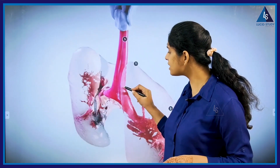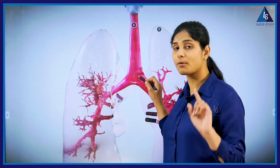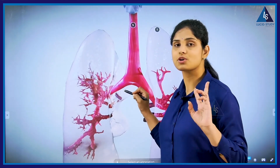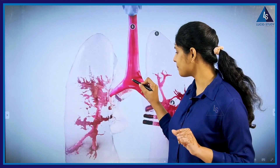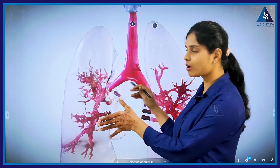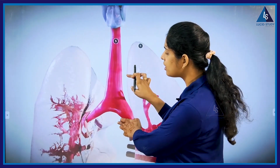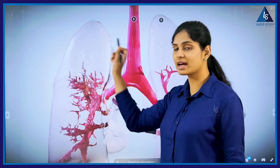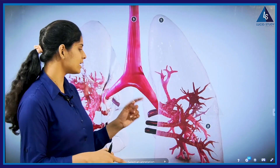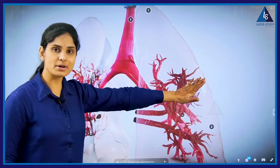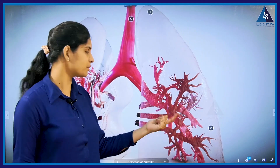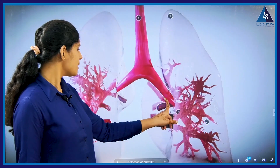The trachea, or wind pipe, gets divided into two other structures. If we talk about one, it is called a bronchus; if we talk about two, we call them bronchi — not bronchuses. So these are the bronchi, which are further divided to form structures called bronchioles. The bronchioles are present inside the lungs, and they have many branches. These many branches have special names relating to lobes, which we will discuss in further classes.